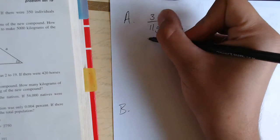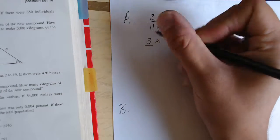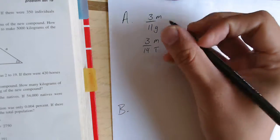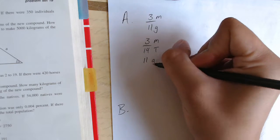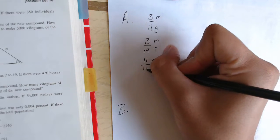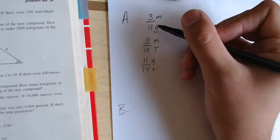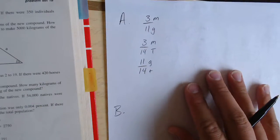So the second ratio would be part A, which would be 3M, to the total, which is 14. And the third ratio would be 11, which is part B, to the total, which is 14. Again, we get the total number by adding part A and part B.